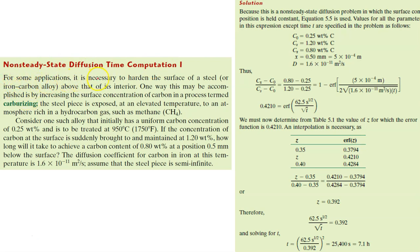For some applications, it is necessary to harden the surface of a steel above that of its interior. One way this may be accomplished is by increasing the surface concentration of carbon in a process term carburizing. The steel piece is exposed at an elevated temperature to an atmosphere rich in hydrogen gas, such as methane. Consider one such alloy that initially has a uniform carbon concentration of 0.25 weight percent and is to be treated at 950 degrees C.